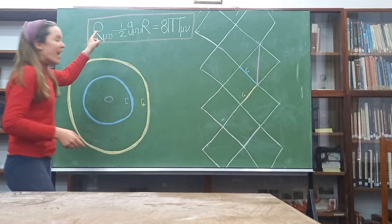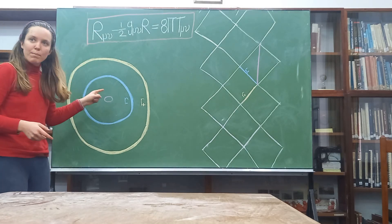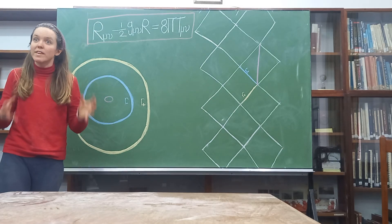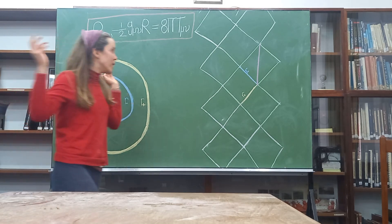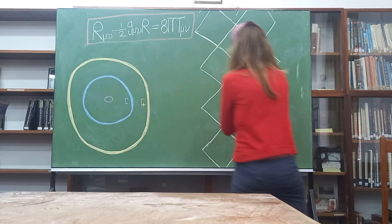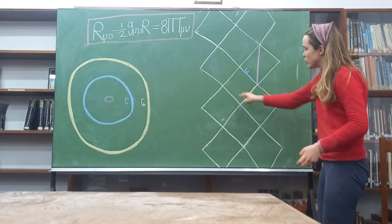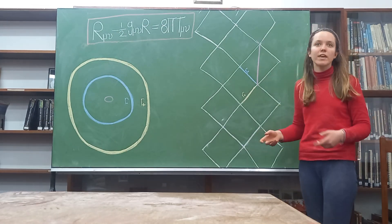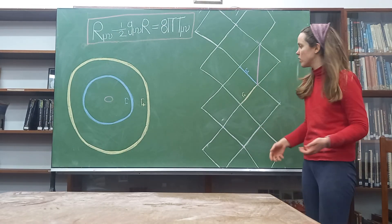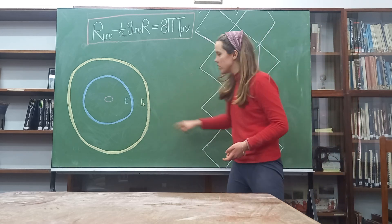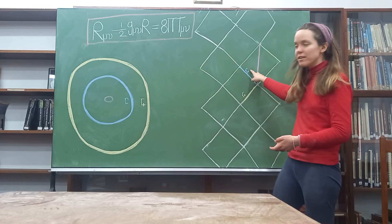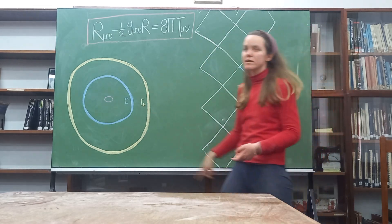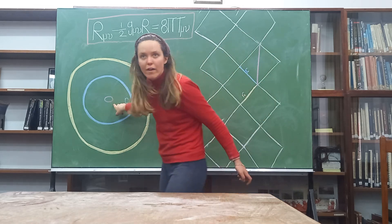We can solve Einstein's field equations for this type of black hole — I do not have time to bore you with the details — but when we do, we get this diagram. These two squares over here represent everything in our universe. R-plus is the outer horizon, R-minus is the inner horizon, and the vertical line is the singularity.